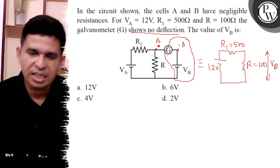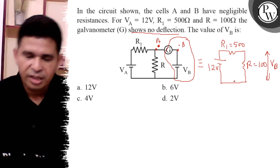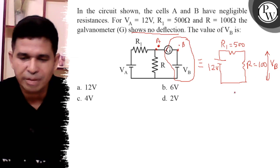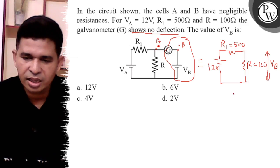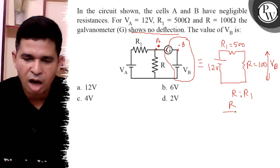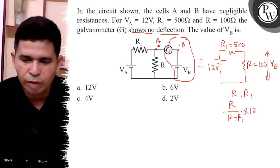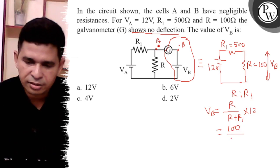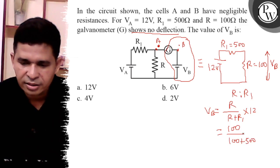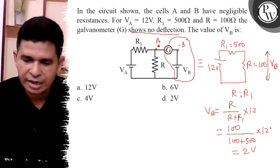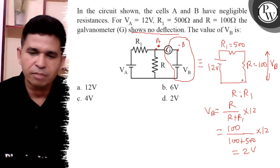Using the potential distribution method, the 12 volt is divided in the ratio of R to R1. So VB equals R divided by (R plus R1) into 12 volt. Substituting, it is 100 divided by (100 plus 500) into 12, which equals 100 over 600 into 12, giving VB equals 2 volt.